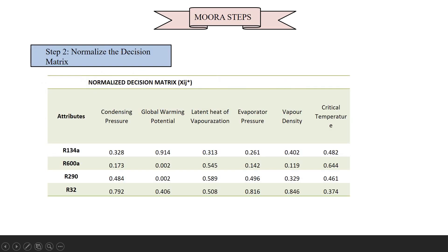Step 2 is the normalized decision matrix. This matrix, also called Xij, is calculated using the formula: Xij divided by the square root of the summation from i=1 to M of Xij squared.